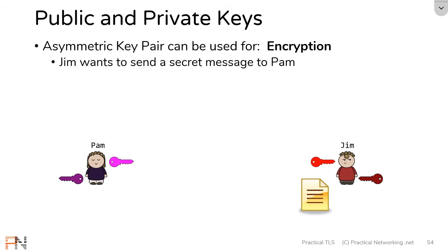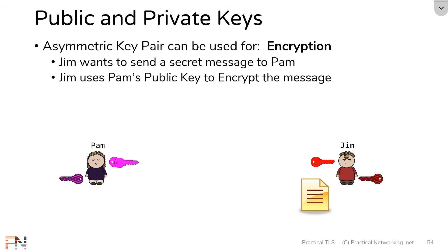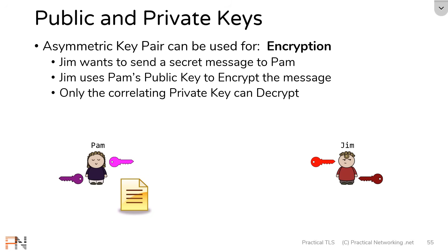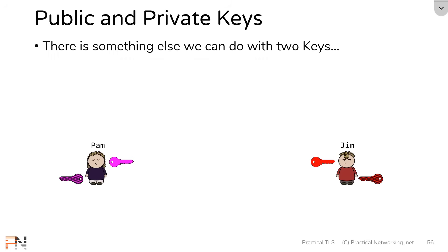Let's say Jim has a message he wants to send to Pam securely. He can use Pam's public key to encrypt that message. The only key in the world that can decrypt it back to the original message is the correlating private key, which only Pam has — because the private key is never shared. That message can be sent across the wire safely, knowing only Pam has the required key to decrypt it. This is how asymmetric keys are used to provide confidentiality — the idea that data is only accessible to the intended recipient.